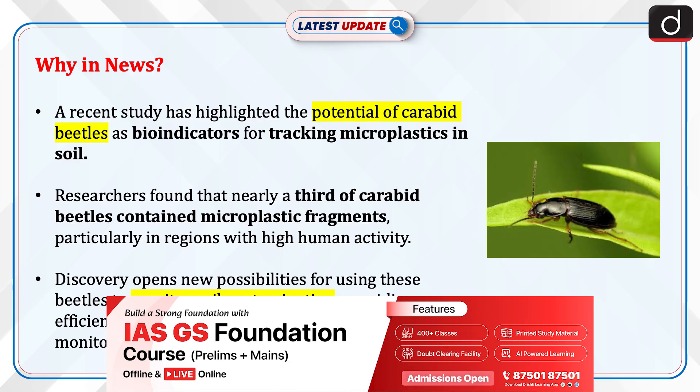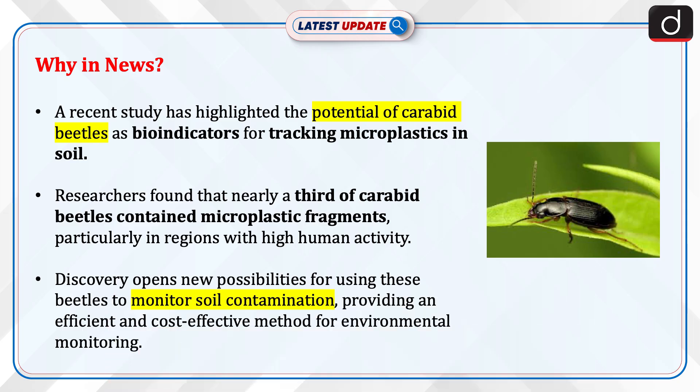A recent study has highlighted the potential of carabit beetles as bioindicators for tracking microplastics in soil. Researchers found that nearly a third of carabit beetles contained microplastic fragments, particularly in regions with high human activity. This discovery opens new possibilities for using these beetles to monitor soil contamination, providing an efficient and cost-effective method for environmental monitoring.